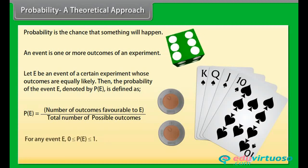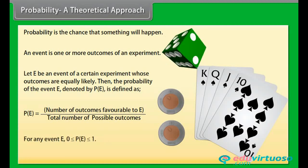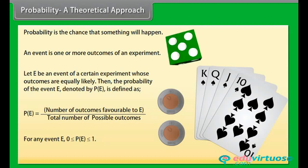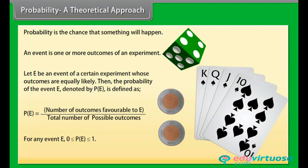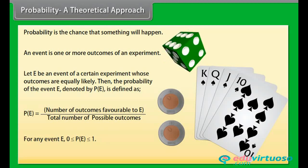For any event E: 0 is less than or equal to the probability of event E, which is less than or equal to 1.